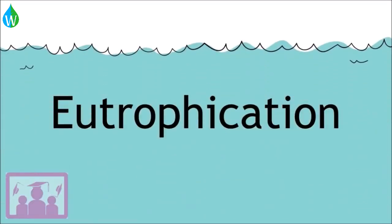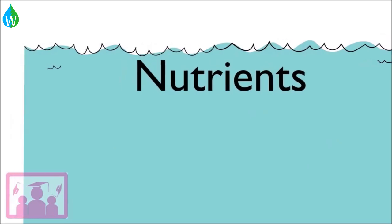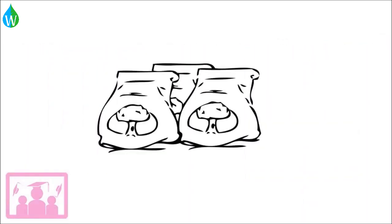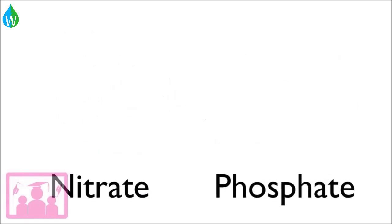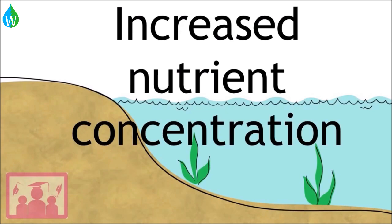In a water body, like a river or lake, eutrophication occurs when too many nutrients are added to the system. It starts when fertilizers, which are rich in nutrients like nitrate and phosphate, are washed into the river or lake system. This leads to an increase in nutrient concentrations in the water.